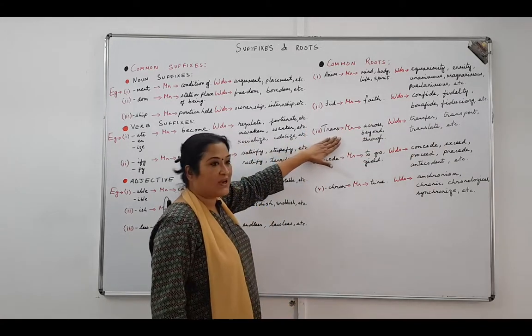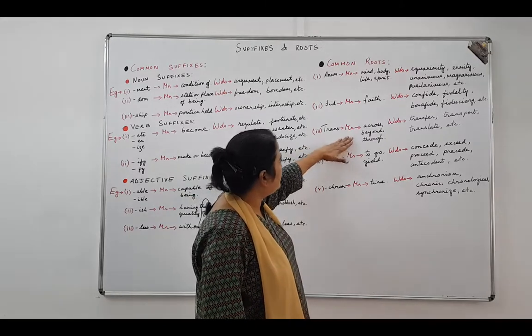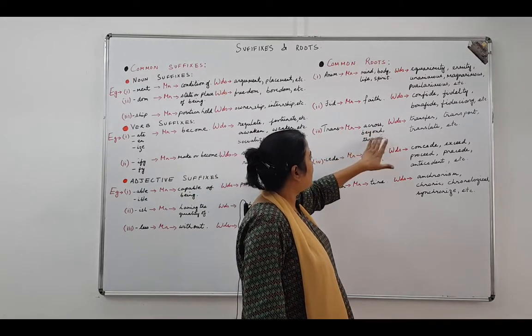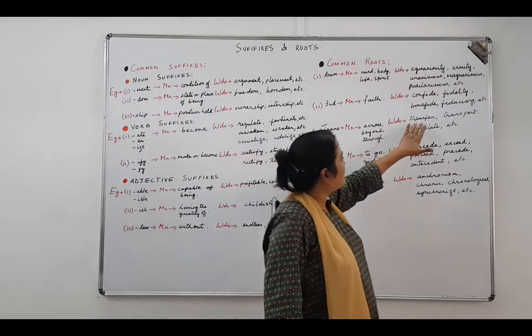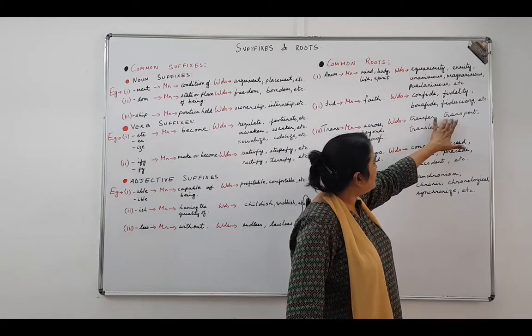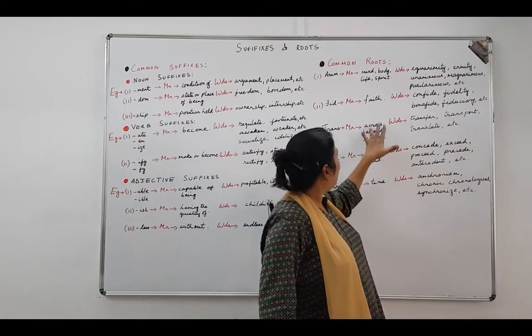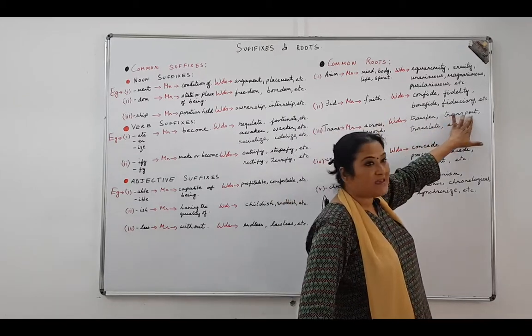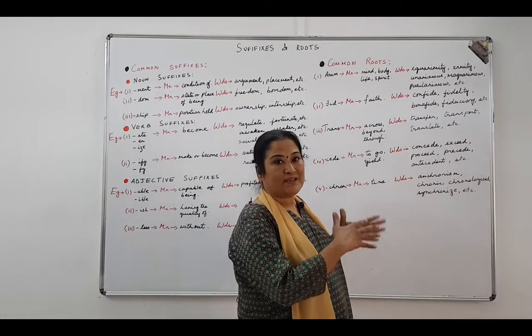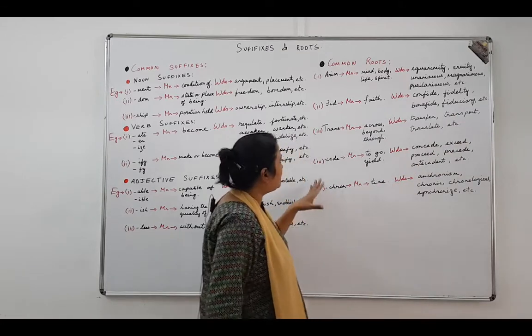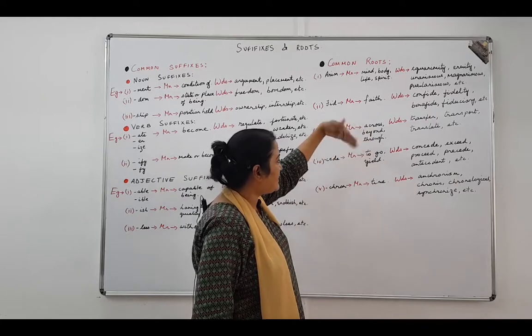Third one is trans. Trans is a root word which means across, beyond, or through. The words: transfer, transport, translate. Trans is across, and port means carry. So transport is something which is carrying things from one place to another. It is taking things across.